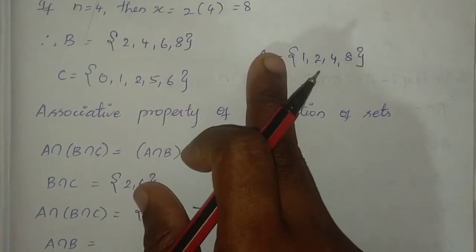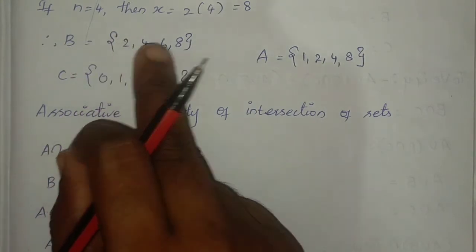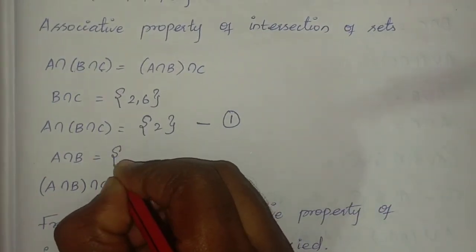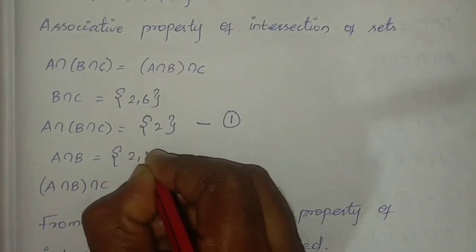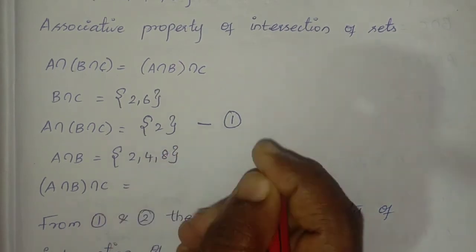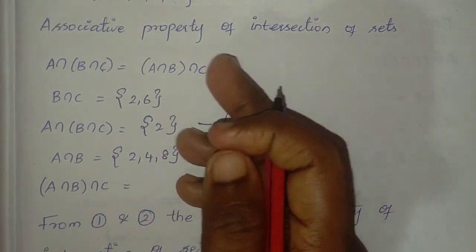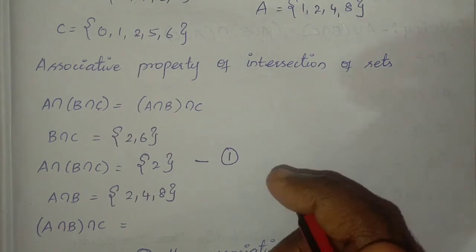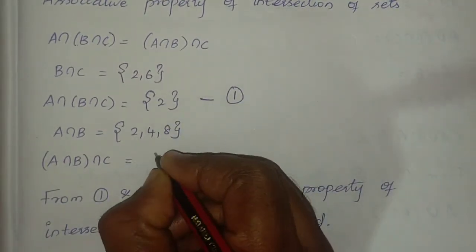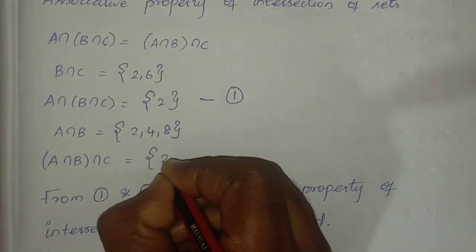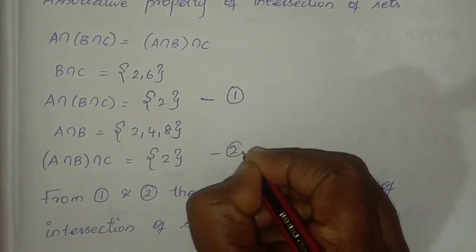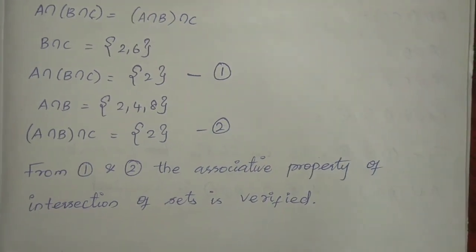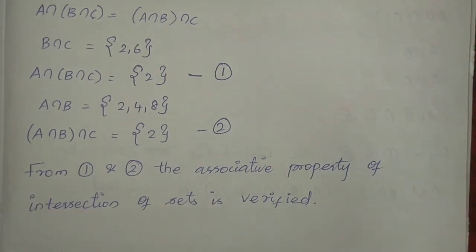A intersection B equals {2, 4, 8}. Comparing with C, finding common elements. From equation 1 and equation 2, the associative property of intersection of sets is verified.